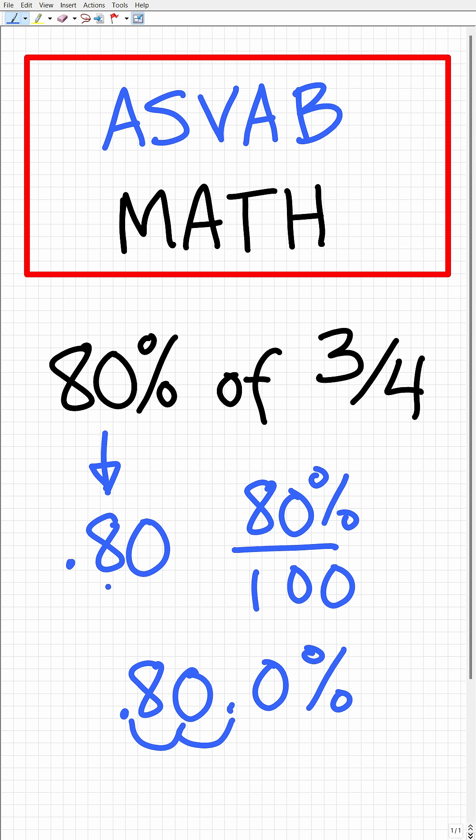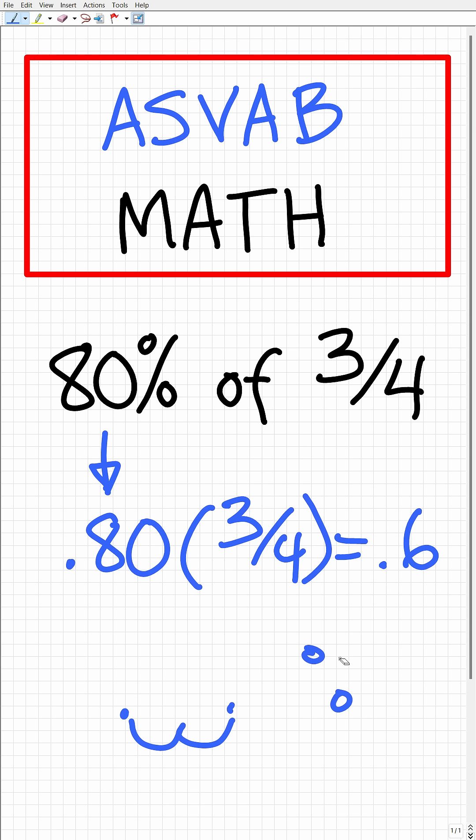So now we have 0.80, and we're going to multiply that by three-fourths. If you want to follow along and get your calculator out, I'll do it myself. So three-fourths, or three divided by four in your calculator, is 0.75. And then, of course, that will be multiplied by 0.8, giving us an answer of 0.6. So this is how you do this with a calculator.